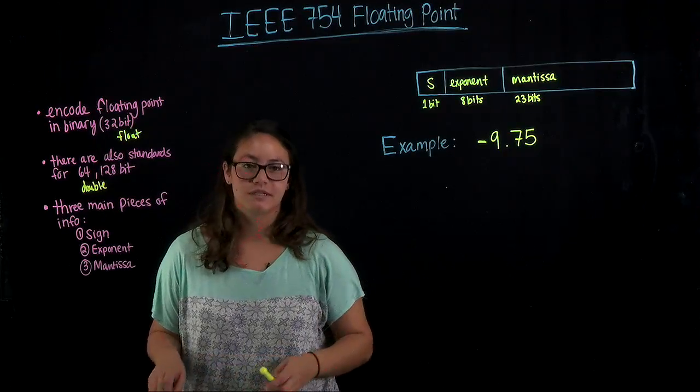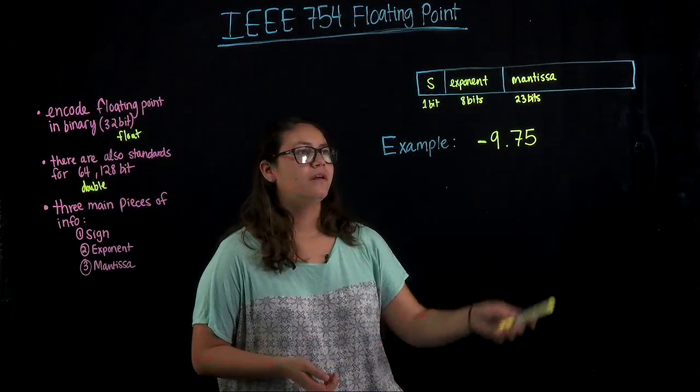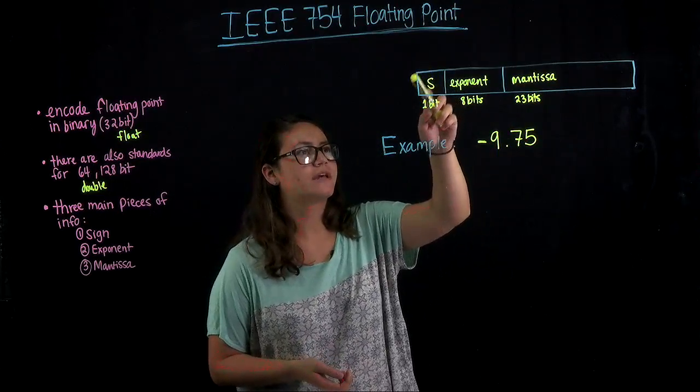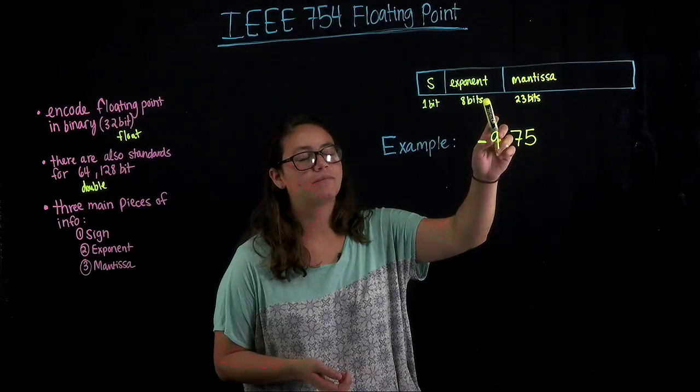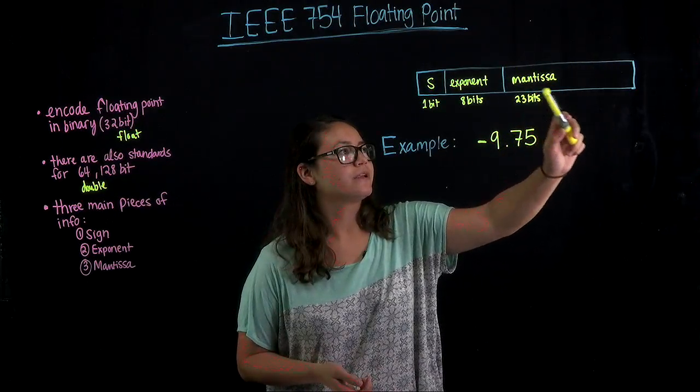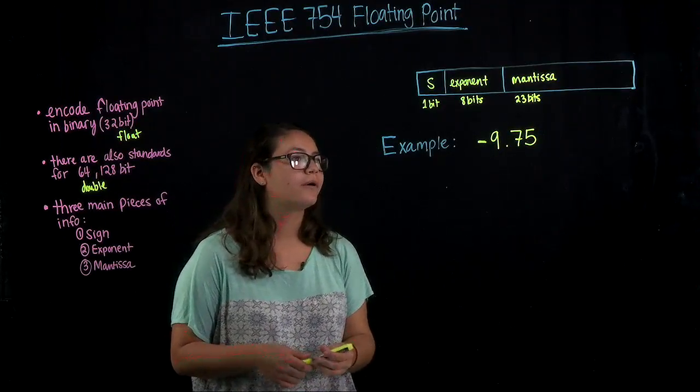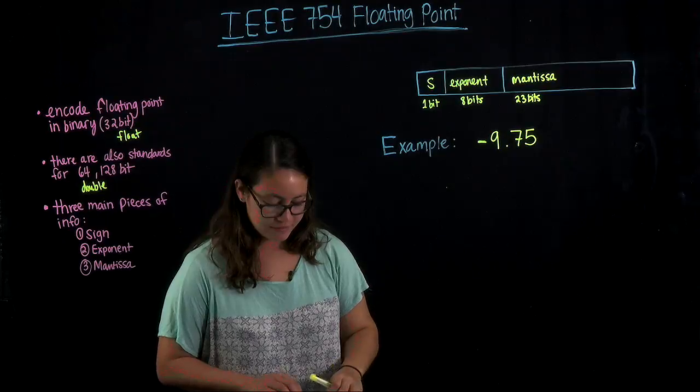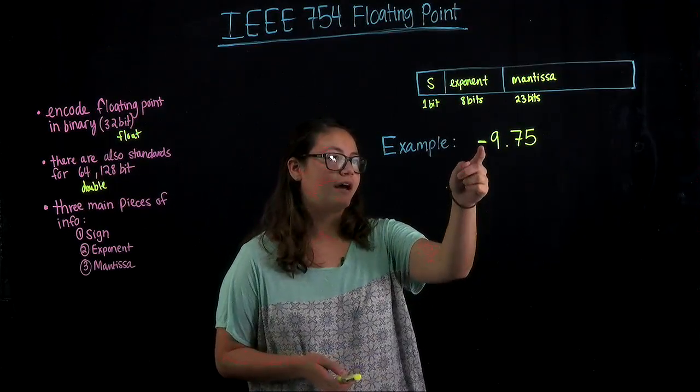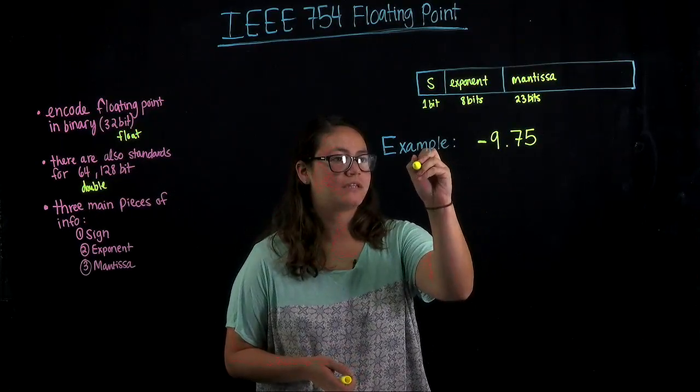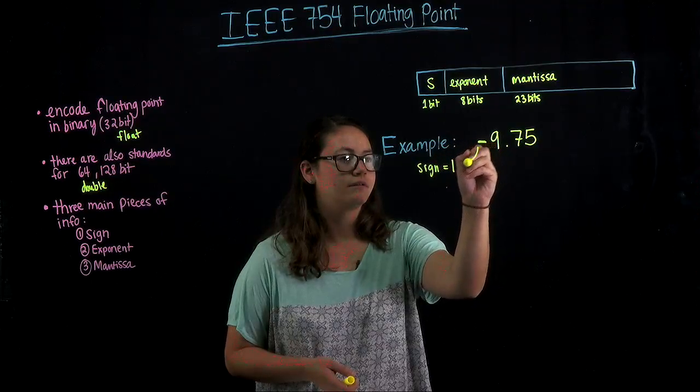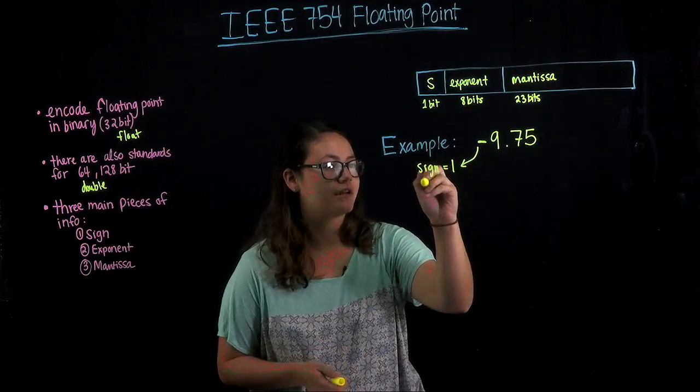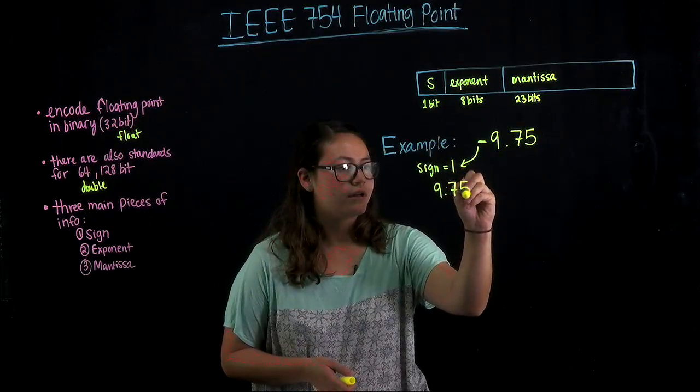We're going to just do an example and go through this step by step. Over here you can see how we're going to actually encode this to get a total of 32 bits. The sign is going to be the first bit, then the exponent is going to be the next 8 bits, and then the mantissa will be the last 23 bits. If we start off with a number like negative 9.75, the most obvious thing that we can see here is the sign. When the sign is negative, that means the sign bit is going to be 1. Once we assign that sign bit, we can just forget about the sign and take care of the rest of the number. So now we have 9.75.